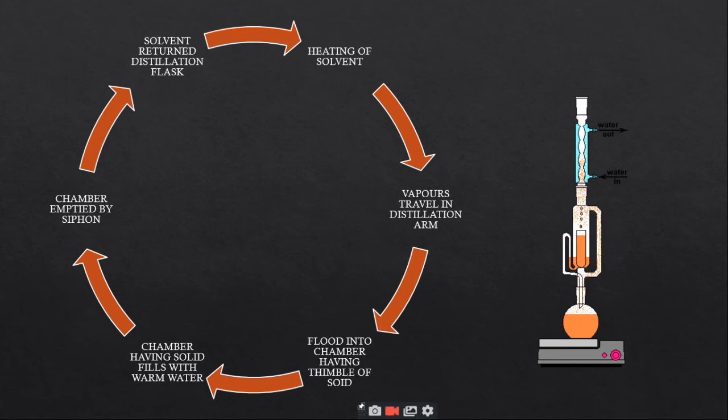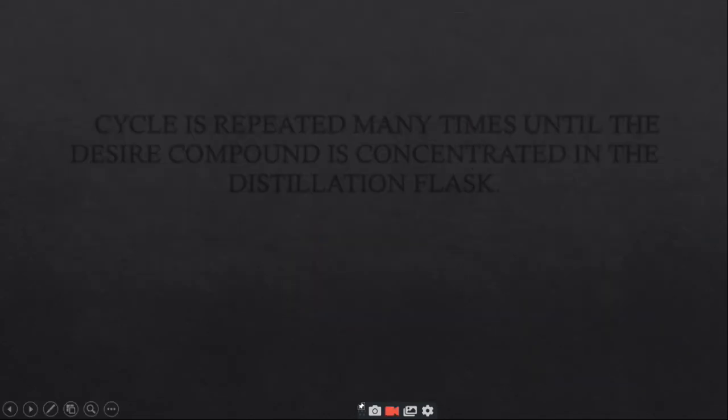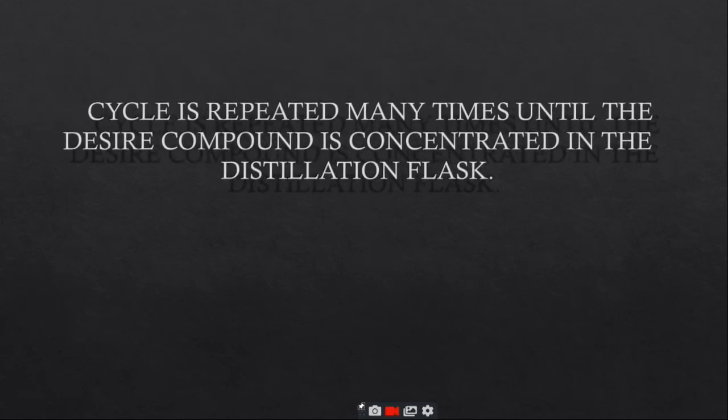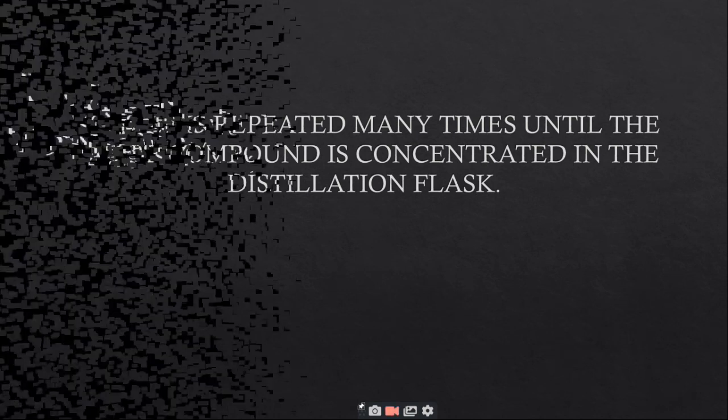Thimble ensures that the rapid motion of solvent doesn't transport any solid material to the still pot. This cycle repeats many times until the desired compound is concentrated in the distillation flask.